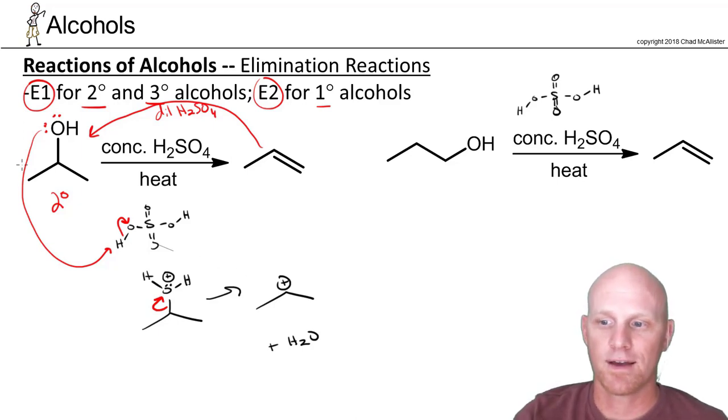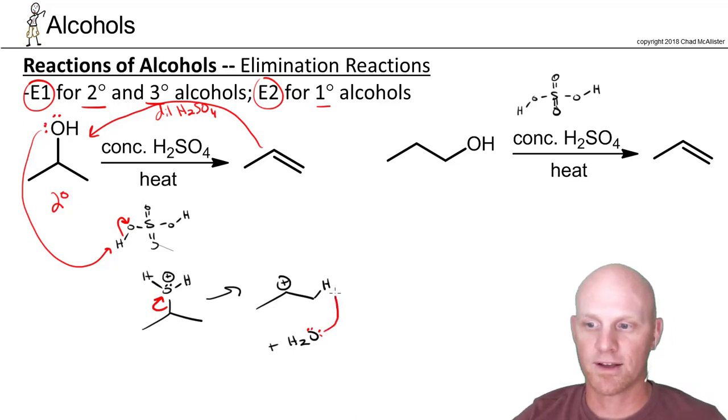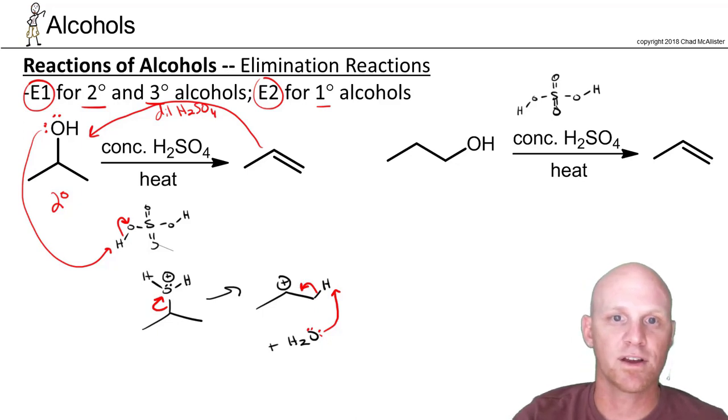So now we've got this carbocation, and rearrangements are possible, although not for this example, but in principle, rearrangements could happen. And then from here, we're going to deprotonate. In this case, the water molecule that just left, some people might use the HSO₄⁻ molecule that would have formed earlier, but water is probably the more likely base here. We'll do the rest of E1 elimination to form our alkene product.